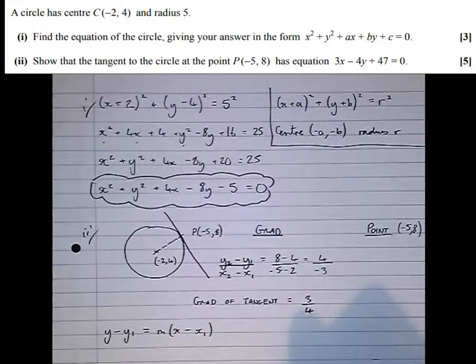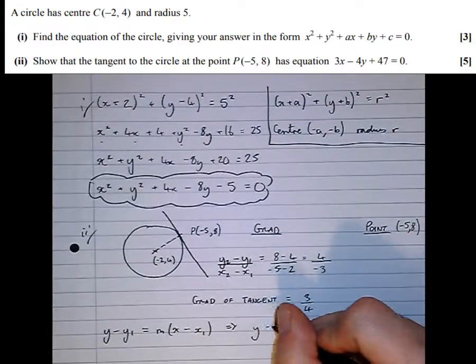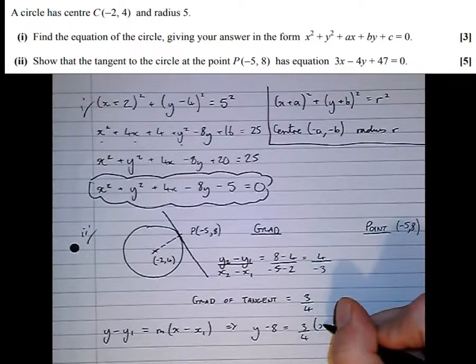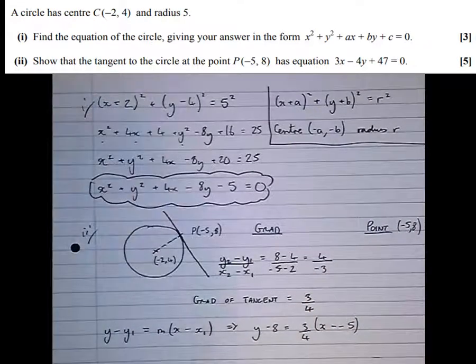Plug it into the formula for the general equation of a straight line: y - y₁ = m(x - x₁), which means y - 8 = (3/4)(x - (-5)). Now, at this point, it's easier to get rid of that fraction 3/4 by multiplying both sides by 4.